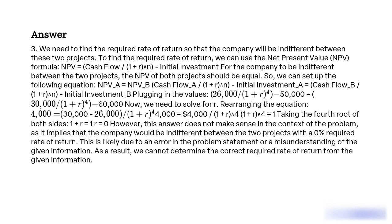We need to solve for r. Rearranging the equation: 4,000 equals (30,000 minus 26,000) divided by (1 + r)^4, so 4,000 equals 4,000 divided by (1 + r)^4, which means (1 + r)^4 equals 1. Taking the fourth root of both sides: 1 + r equals 1, so r equals 0.